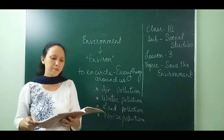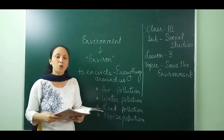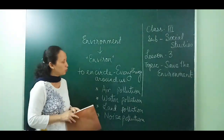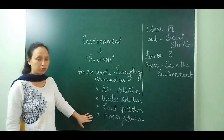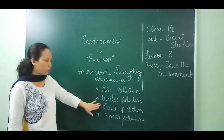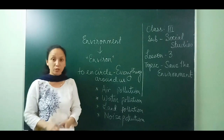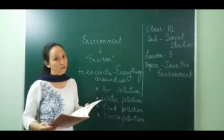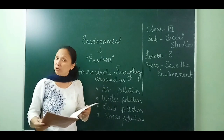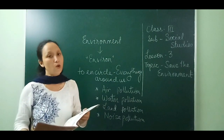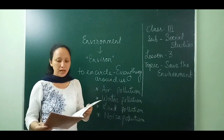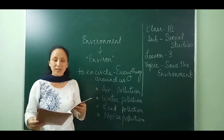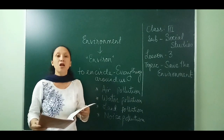A very quick recap: our environment consists of both living and non-living things. There are four types of pollution: air pollution, water pollution, land pollution, and noise pollution. Polluted air is harmful for all. We must not throw waste in water bodies. We can help our environment by growing more trees, not wasting paper, and saving water.